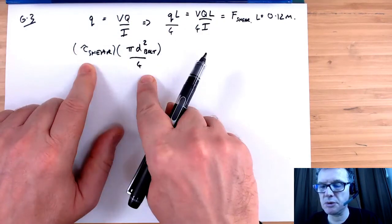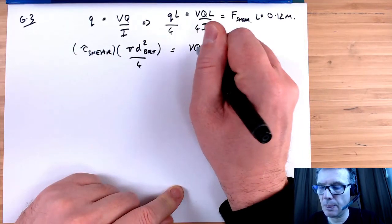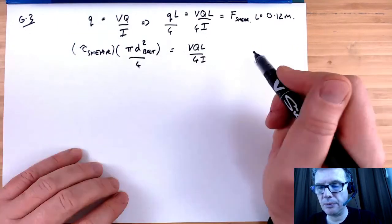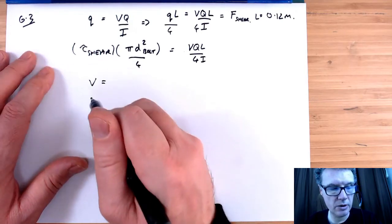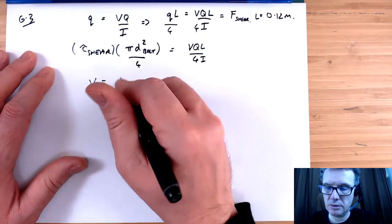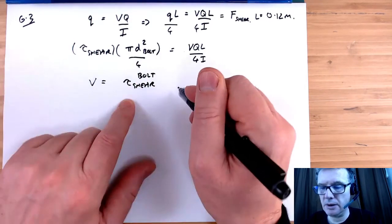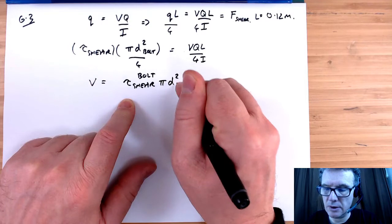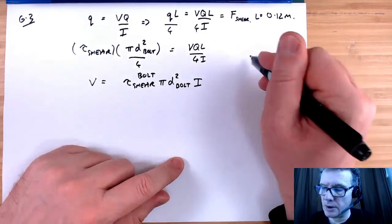Stress times area gives us the shear force. The fours cancel, so we're looking for the largest permissible vertical shearing force. We need the shear force in the bolt and the diameter of the bolt.